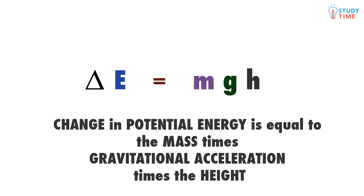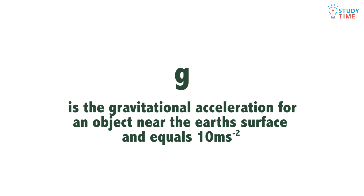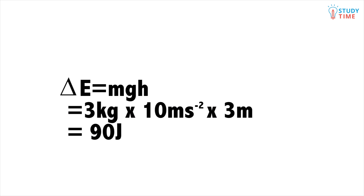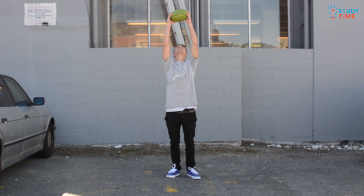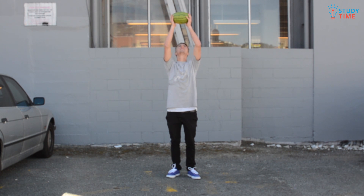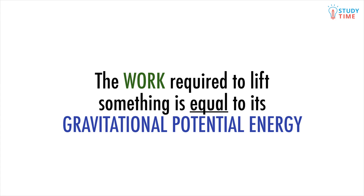If the mass and the height get bigger, the potential energy gets bigger. Remember, g is the gravitational acceleration for an object near the earth's surface and equals 10 meters per second per second. Let's say the watermelon is quite massive and weighs 3 kilos. We can find the potential energy due to earth's gravity: ΔE equals mgh equals 3 kilos times 10 meters per second per second times 3 meters equals 90 joules. That's the same amount of energy that James used in lifting the watermelon in the first place. That's because the amount of work required to lift an object equals the amount of potential energy stored in the object after it's lifted.